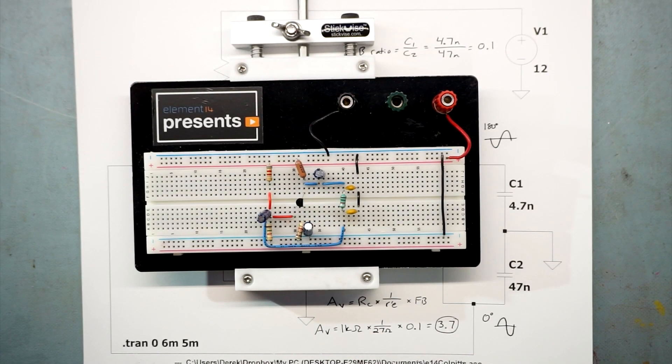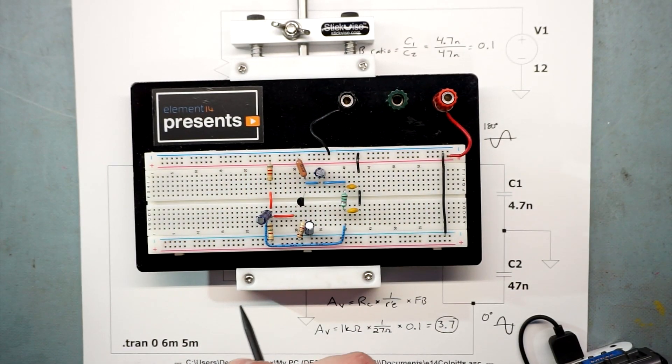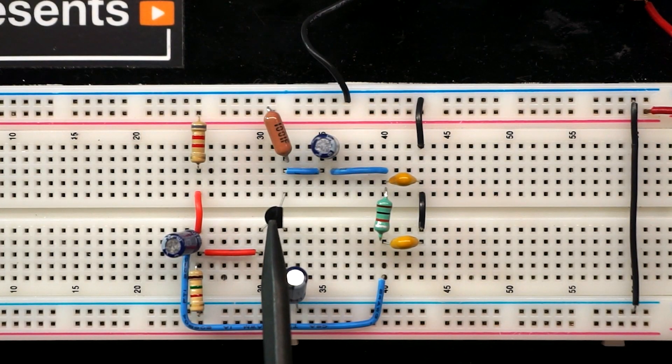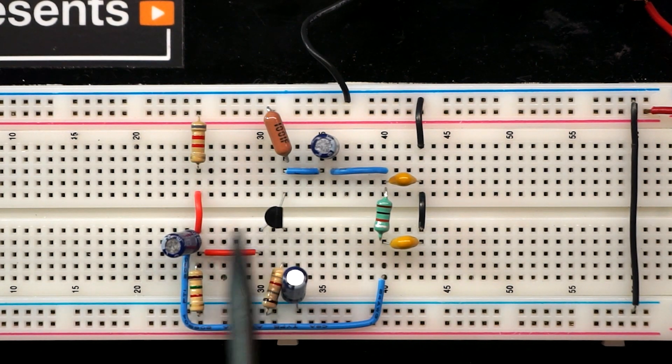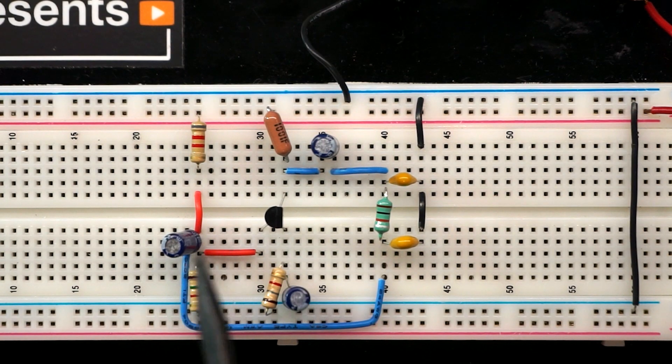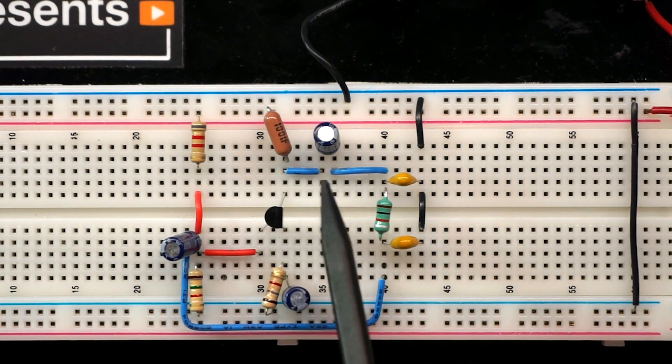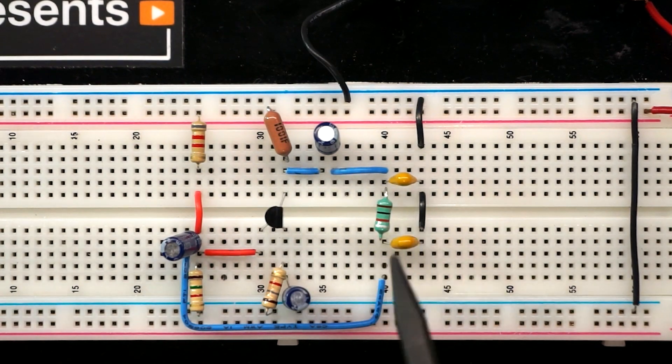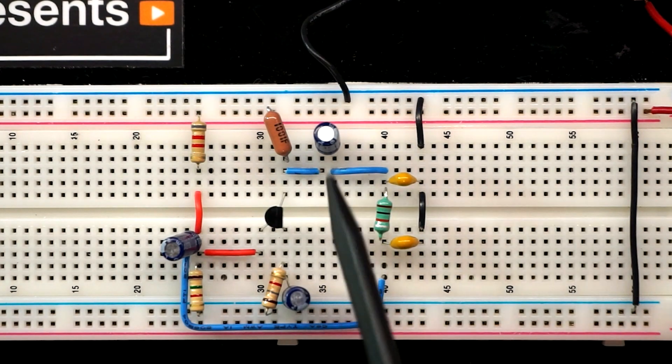I've already got it here on the breadboard. Let's connect some power to this, 12 volts. Then we'll monitor the signal at the output of the tank, the high side of the tank. Here's our transistor that's acting as our amplifier. We have our two resistors here that form the DC bias voltage on the base. Then we have our emitter resistor, our emitter bypass capacitor. I didn't talk about these two DC blocking capacitors. All this does is it keeps DC separate from the amplifier circuit and the tank circuit. I don't want any DC voltage in the tank circuit because it could potentially mess things up.